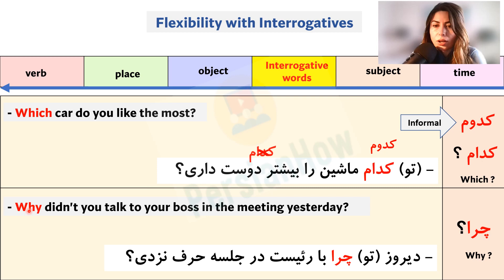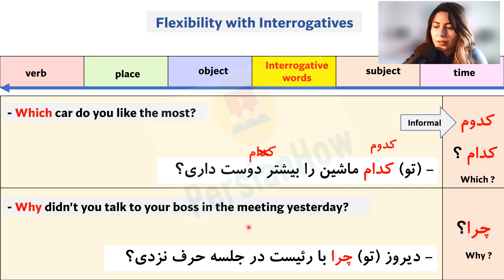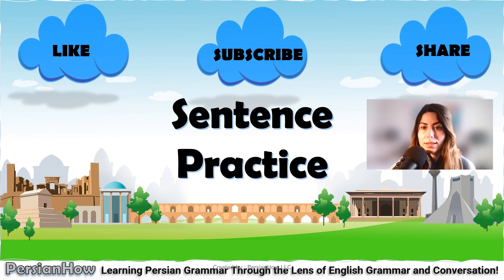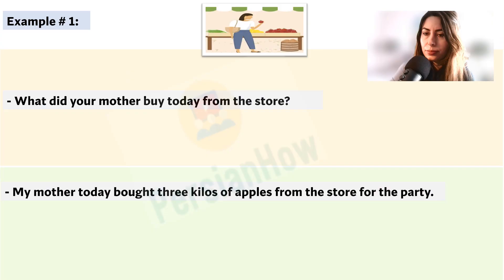'Chera' means why. Example: why didn't you talk to your boss in the meeting yesterday? 'Chera dirooz dar jalaseh ba raiis-et sohbat nakardi?' 'Chera' can also be brought a little bit earlier in the sentence for more emphasis. Note that in Farsi we do not say 'talk to someone' — we say 'talk with someone.' Now we're done with the grammar part. Let's move on to the practice section.